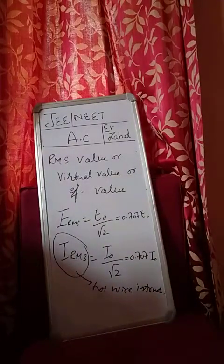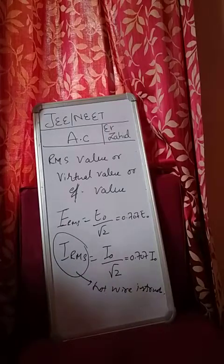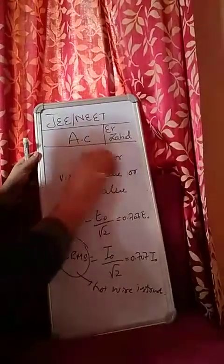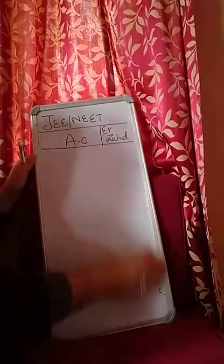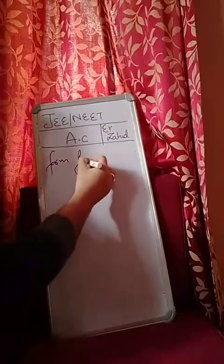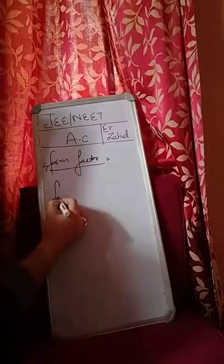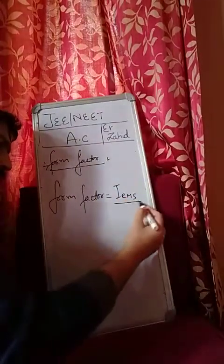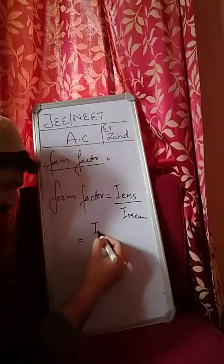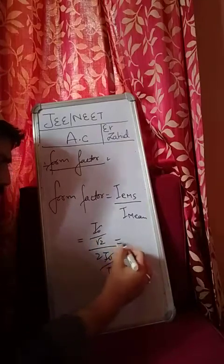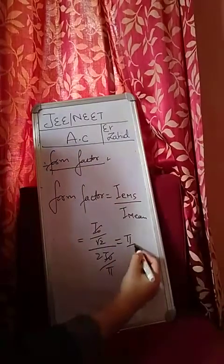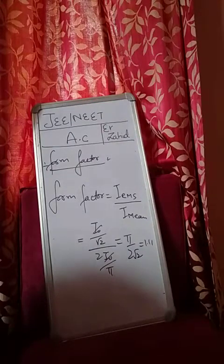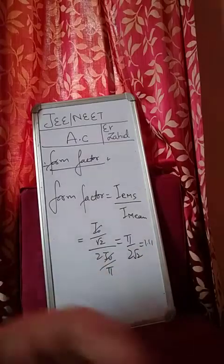And one factor is defined, which we call form factor of AC. Form factor is equal to RMS value divided by mean value. RMS value is I naught by root 2, mean value is twice I naught by pi. So this equals pi by 2 root 2, and that is 1.11. That's called form factor, which is 1.11. We will continue the topics to come. Thank you.